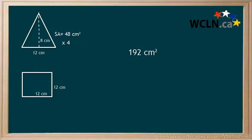Lastly, we calculate the surface area of the rectangle base. We get 144 centimeters squared, and since there's only one rectangle in the pyramid, we can multiply by 1.